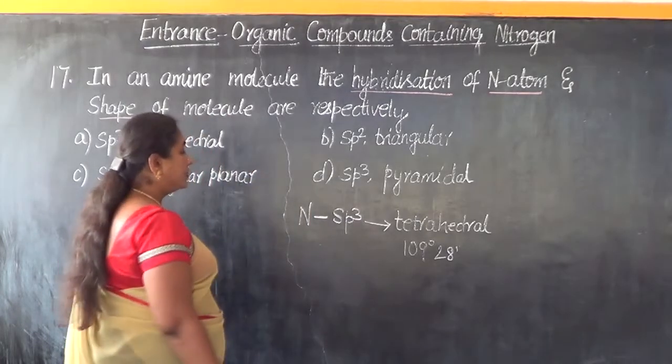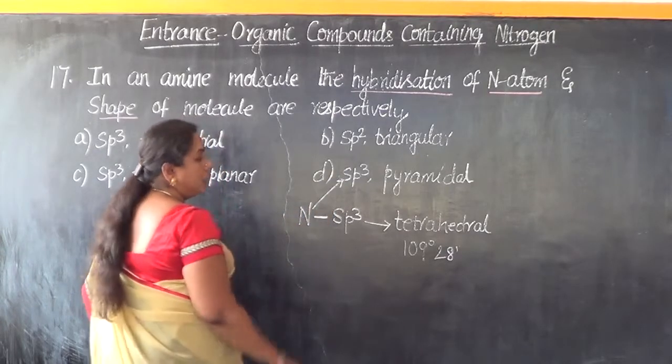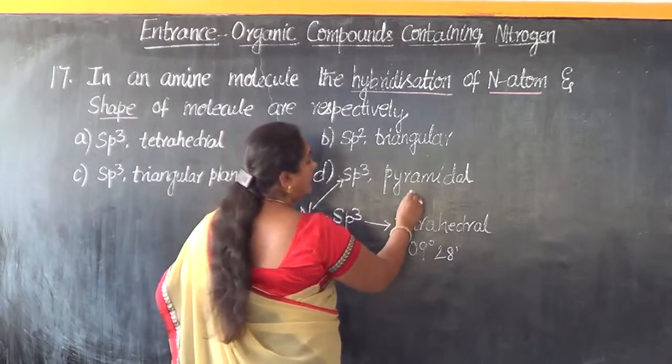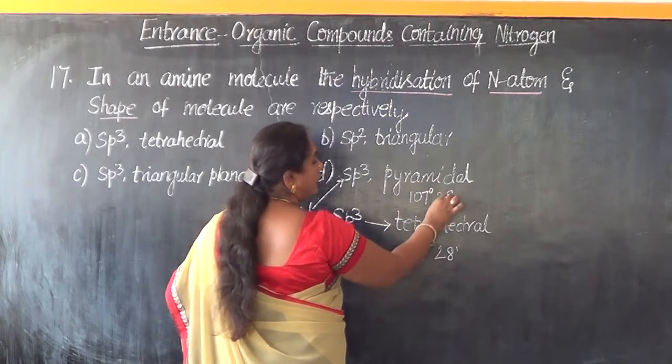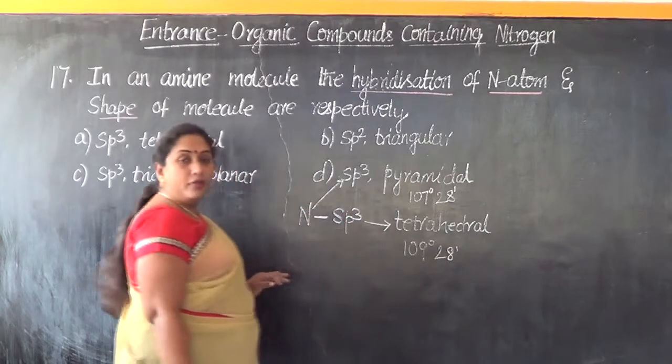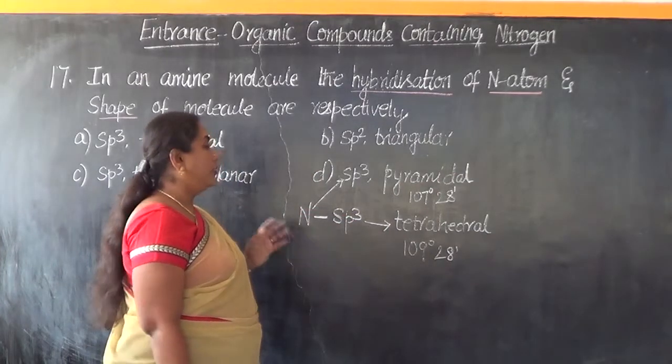Instead, in case of amines, it will be maintaining, though despite SP3 hybridized, the shape will be pyramidal and they will maintain a bond angle of 107 degree 28 minutes or 107.5 degrees to round up.